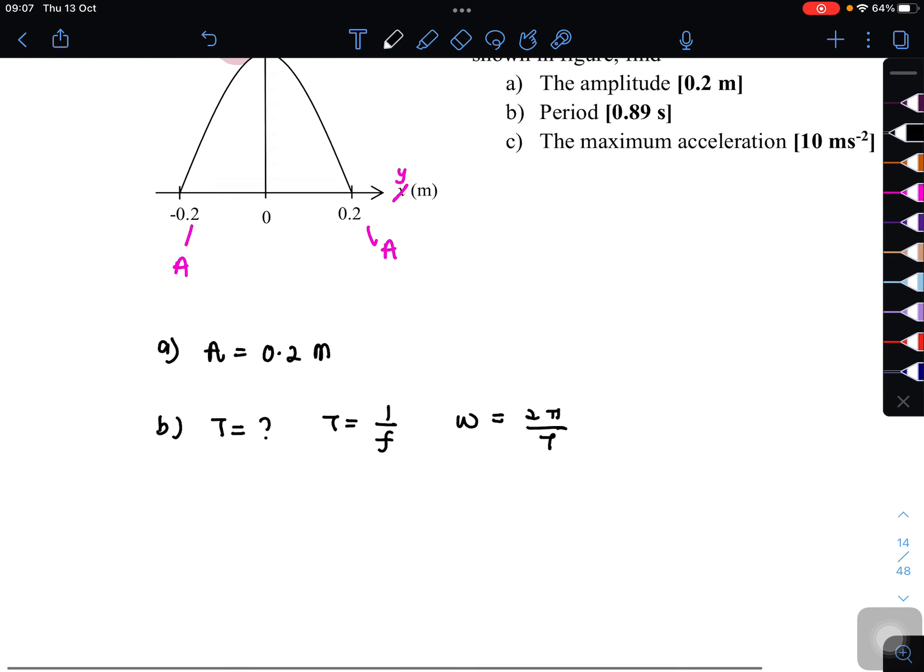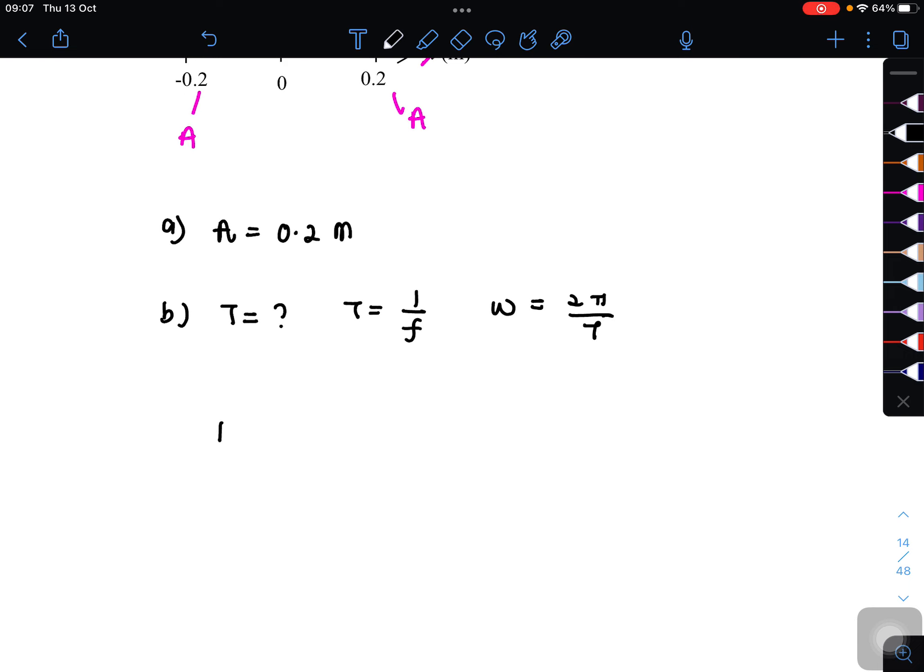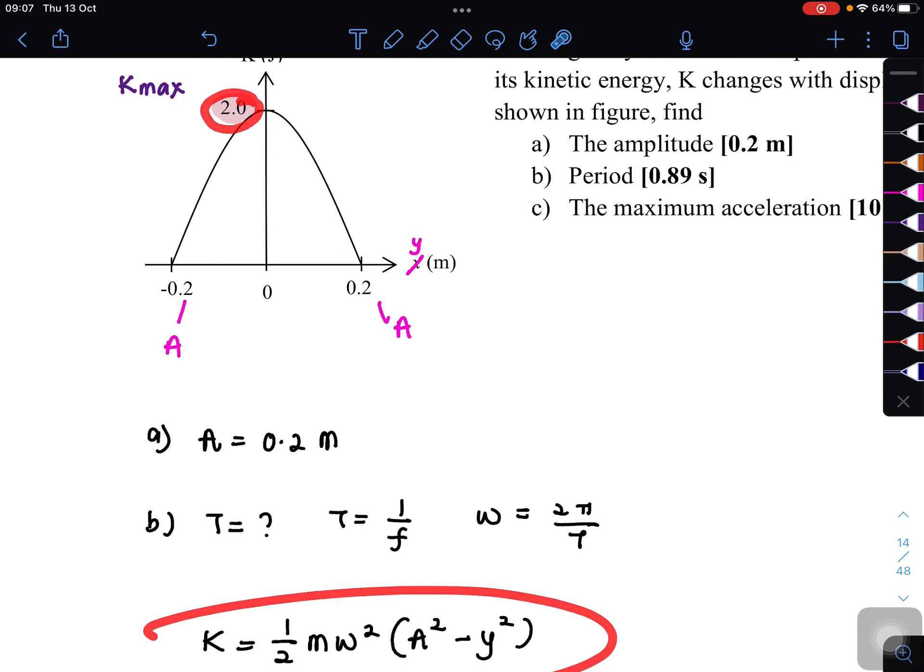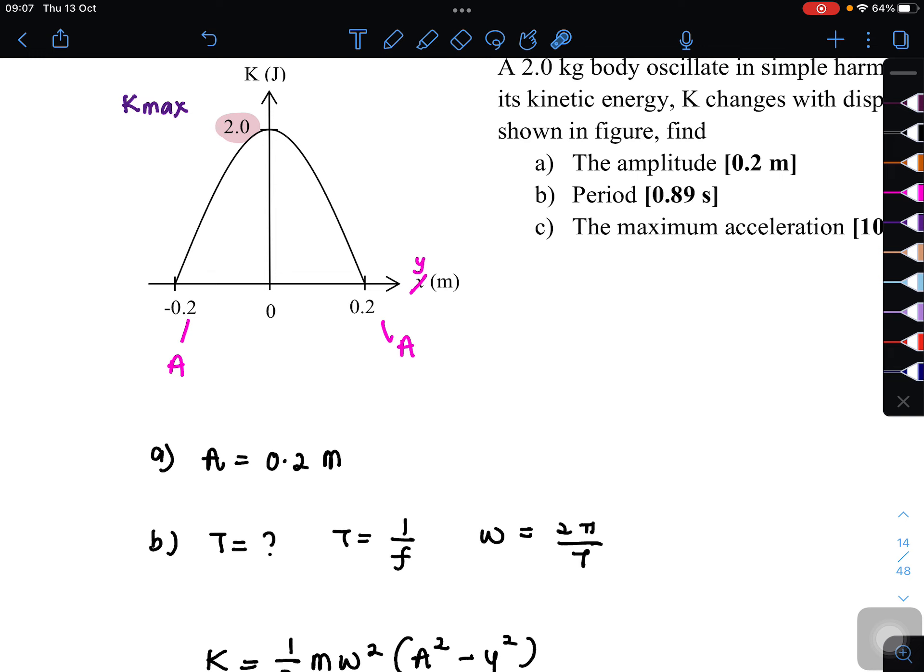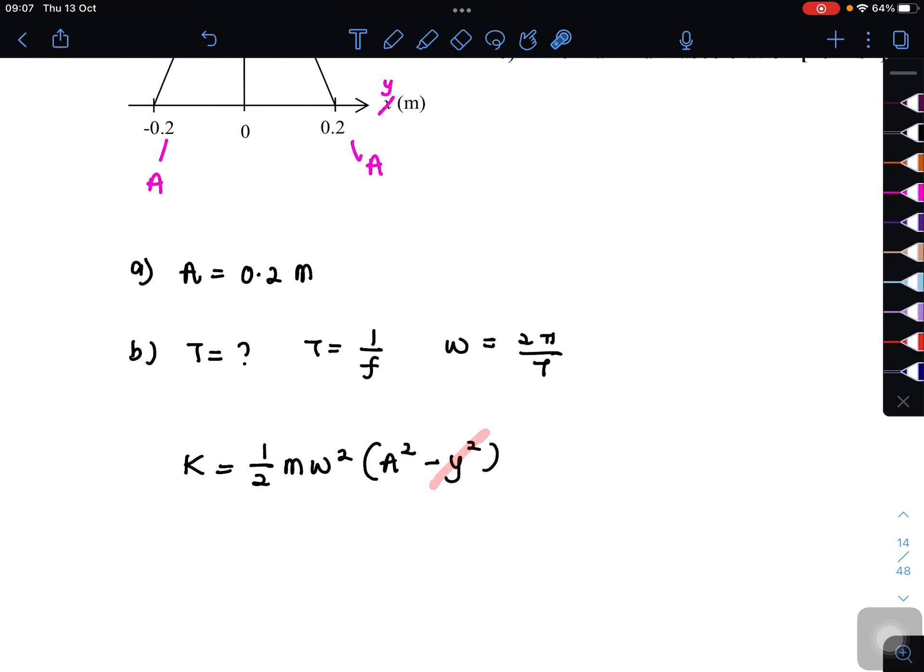And then satu lagi adalah maximum kinetic energy. So the value here we can use to find another value. So before that, let's keluarkan dahulu formula untuk kinetic energy. Which is ada dalam nota di mana formula untuk kinetic energy adalah 1 over 2 M omega square A square minus Y square. So ni adalah formula untuk kinetic energy. So basically here we have the value for kinetic energy. So kalau kamu perasan dekat dalam graph, the value K is equal to 0 when Y sama dengan kosong.